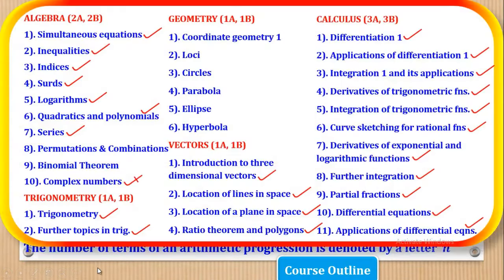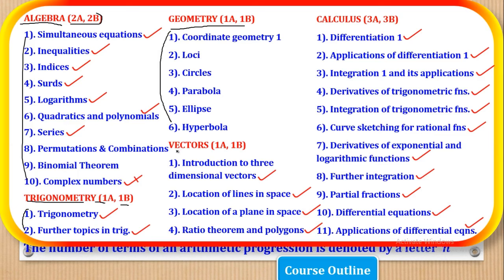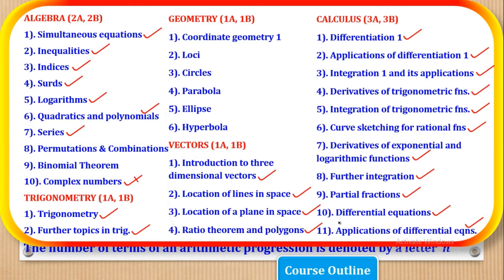Let's first look through the course outline for this paper. Paper 1 is divided into 5 parts: Algebra (2 questions in section A, 2 in section B), Trigonometry (1 question each in sections A and B), Geometry (1 question each), Vectors (1 question each), and Calculus (3 questions in section A and 3 in section B). In this video, we're going to go through the topic of series, which is under Algebra.